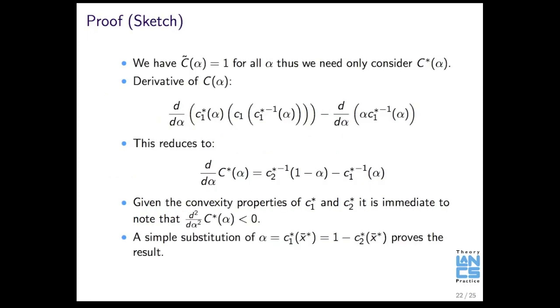The proof just requires a little bit of algebra, it's one of those proofs that you just write down a whole bunch of math for a whole bunch of time, and then eventually it pops out. By design, the Nash cost is always one, so we only need to consider the optimal cost. Differentiate it with respect to alpha, you get an expression like this.